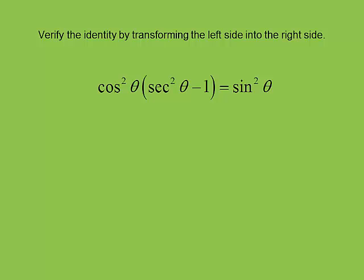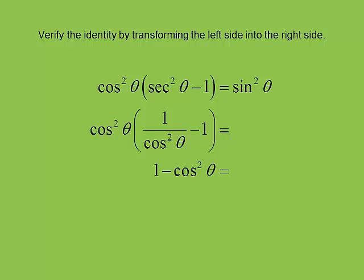We've got another one: cosine squared times the quantity (secant squared minus 1) should always equal sine squared. I left cosine squared alone and turned secant squared into 1 over cosine squared. Distributing cosine squared: cosine squared times 1 over cosine squared is 1, and cosine squared times negative 1 is negative cosine squared. So we have 1 minus cosine squared. Going back to the Pythagorean identities, 1 minus cosine squared equals sine squared. So sine squared equals sine squared — we came straight down the page and the left side looks just like the right side.